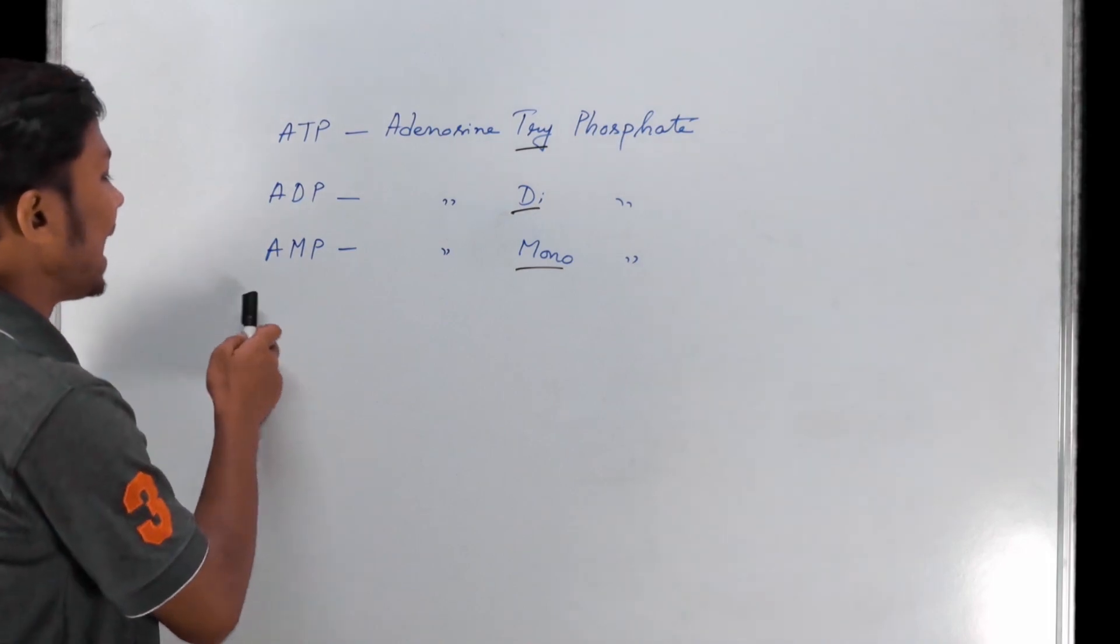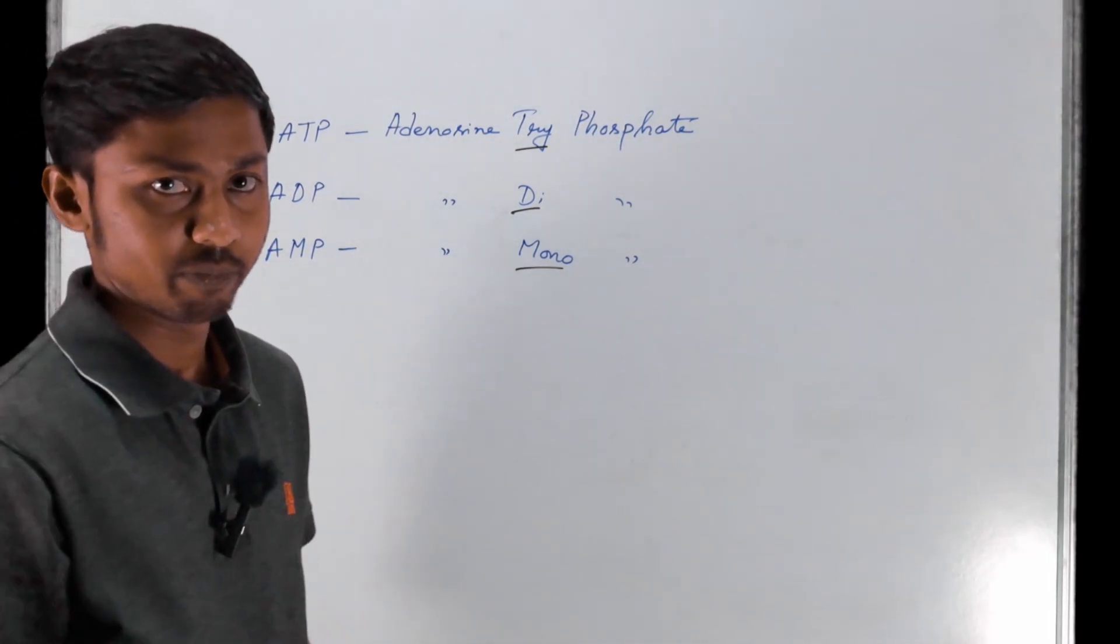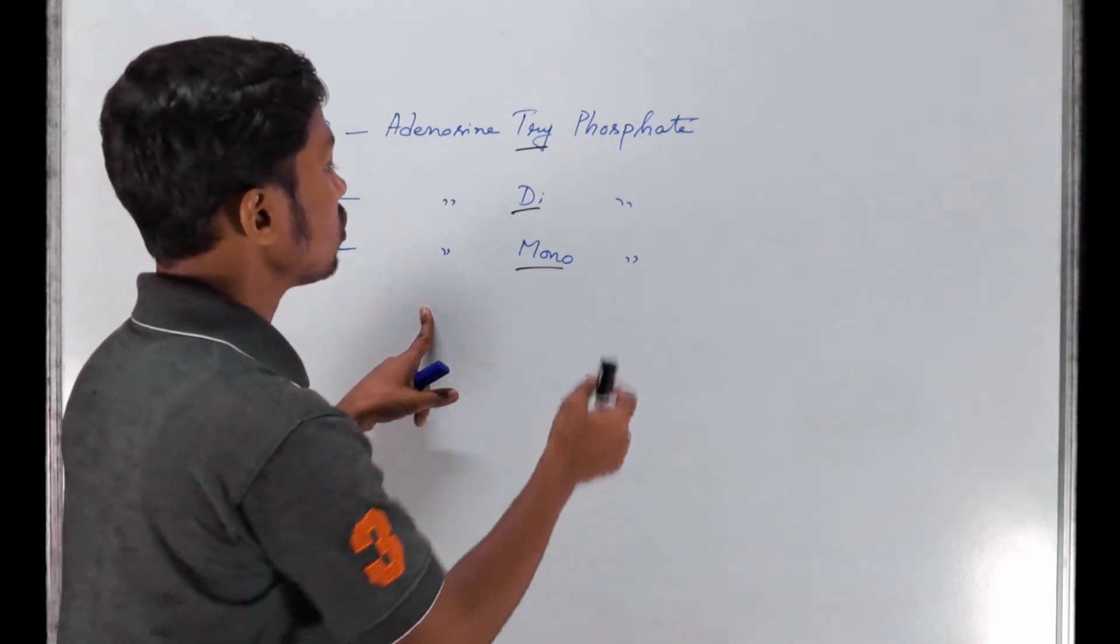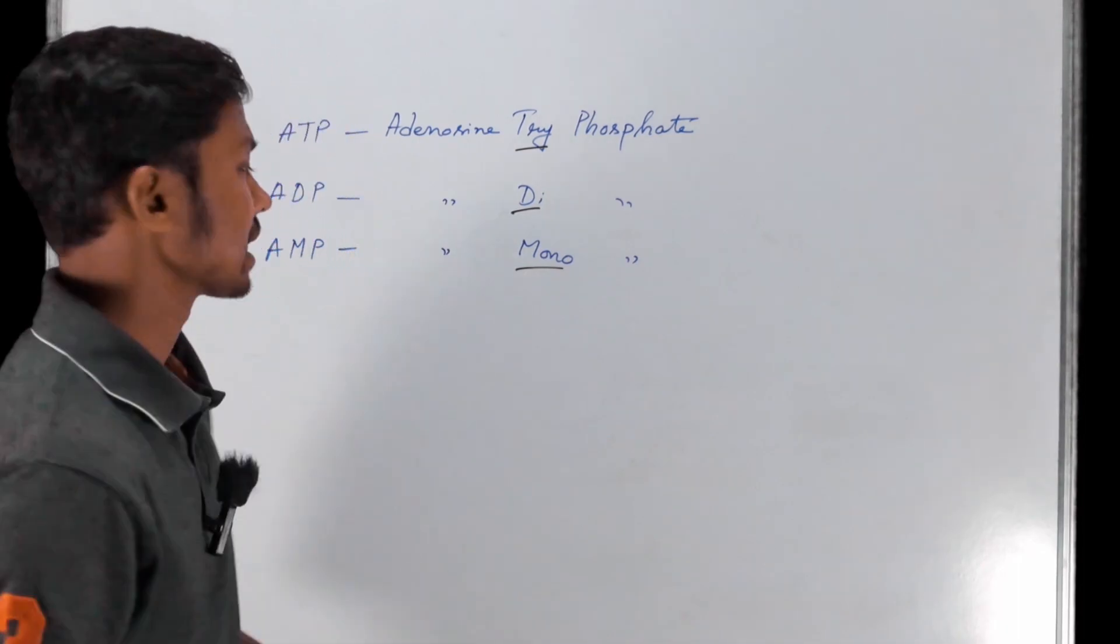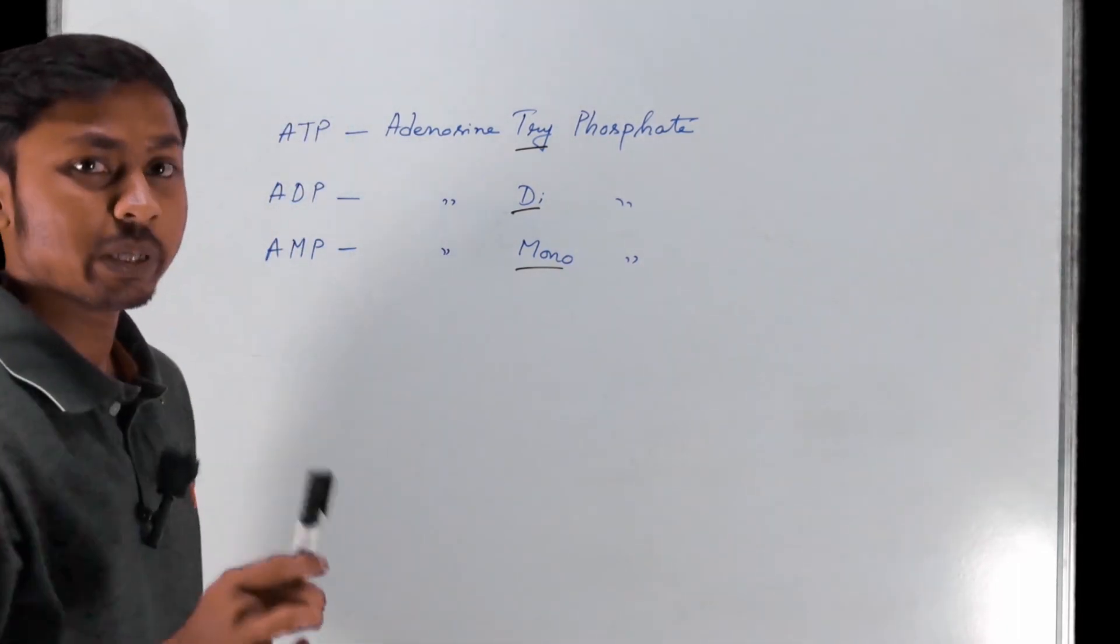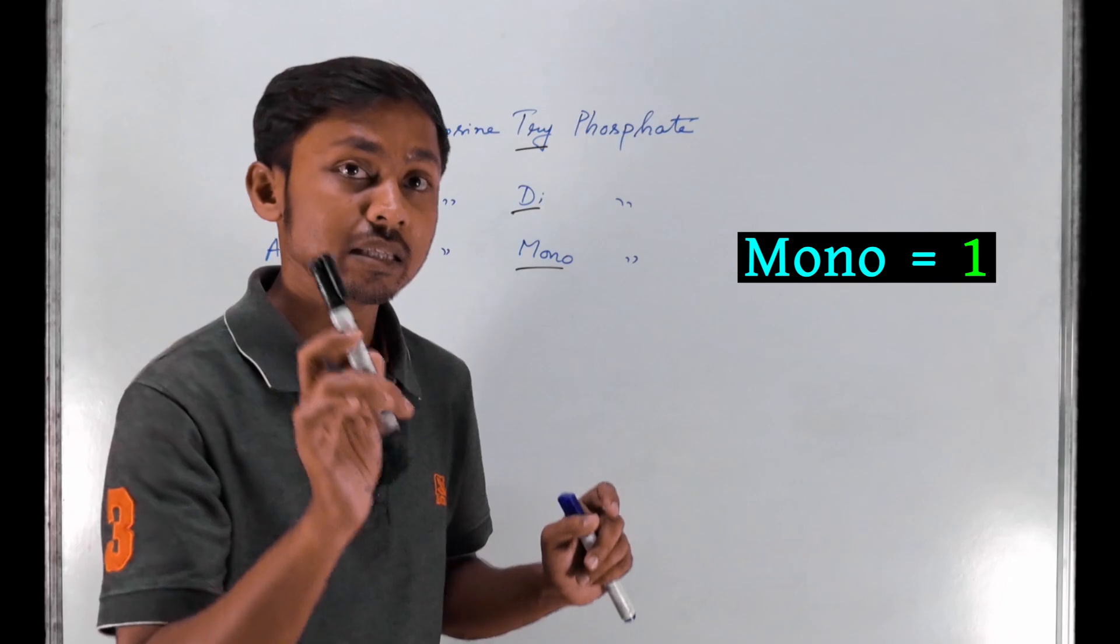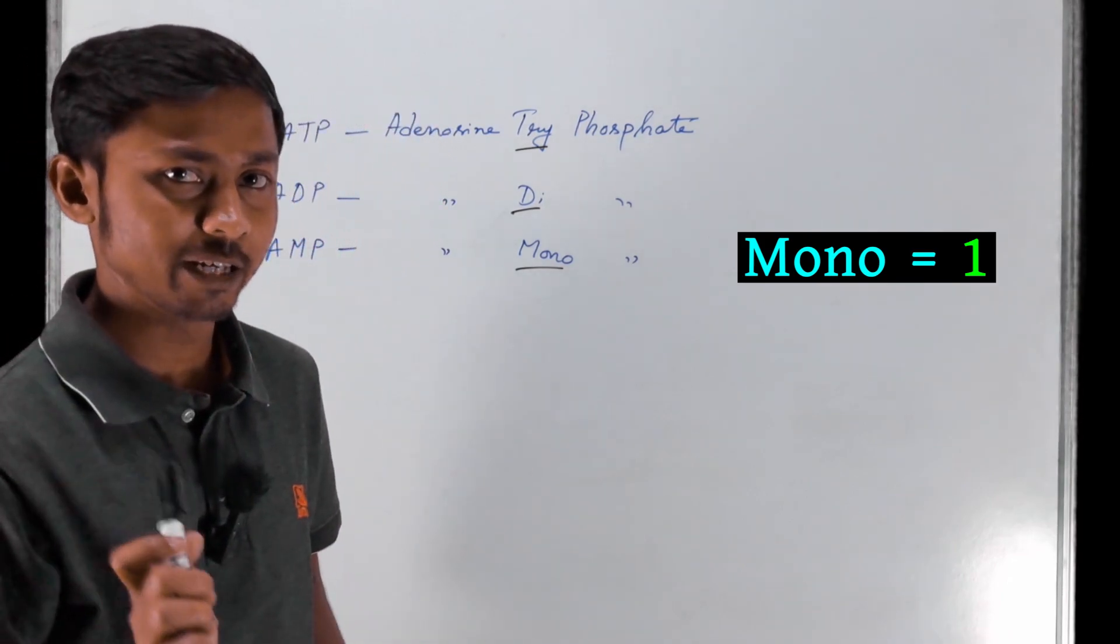Let's start with AMP - adenosine monophosphate. Adenosine is a nitrogen base. The nitrogen base with one phosphate group attached is called adenosine monophosphate.